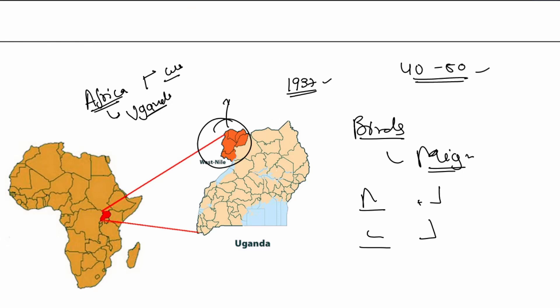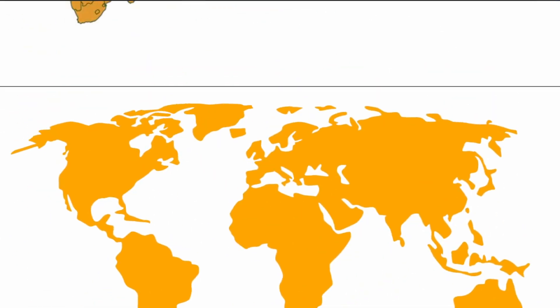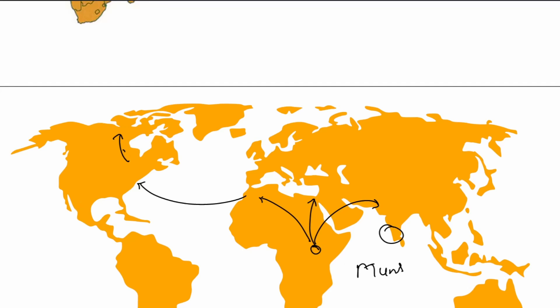It is now commonly found in Africa, Europe, the Middle East, North America, and West Asia. From Uganda, it came to Israel and Tunisia, then to America, New York, and Canada. In India, it was first found in Mumbai in 1952. Since then, it has been mostly observed in the southern states such as Kerala, Andhra Pradesh, Tamil Nadu, Maharashtra, and Karnataka. Now there is an outbreak in Kerala and a person has died there.